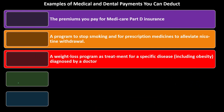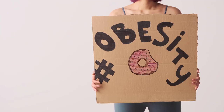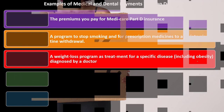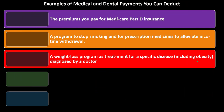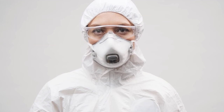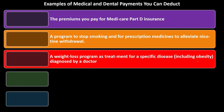A weight loss program as a treatment for a specific disease, including obesity diagnosed by a doctor, is deductible. Obesity has been classified as a disease, which makes it confusing to determine when someone is overweight versus obese. One concern with these tax code incentives is that classifying something as a disease can actually incentivize people to want to be classified under that disease in order to receive the tax benefit — which is a bit of a policy problem.